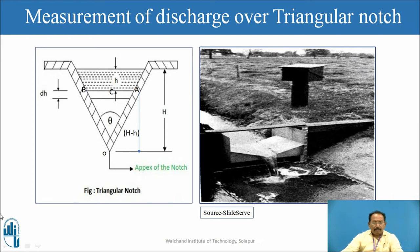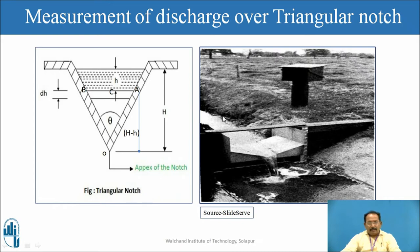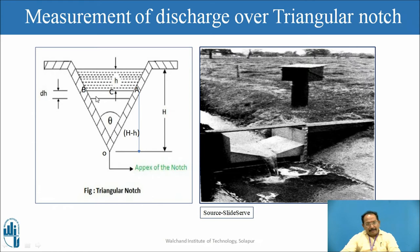Now we will find out the equation for discharge or rate of flow over a triangular notch. This is a notch, and here also the notch is located in a natural stream. The important parameters are: H is the total head, theta is the angle of the notch. Consider a horizontal elementary strip of thickness dh at a depth of h from the free water surface, and find out the discharge through this strip.